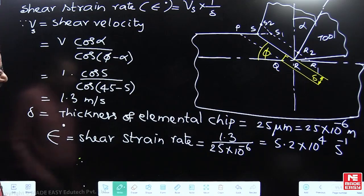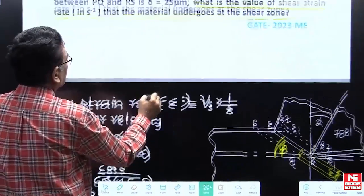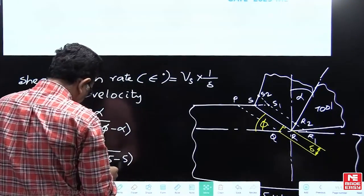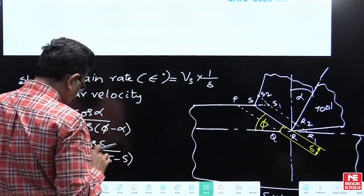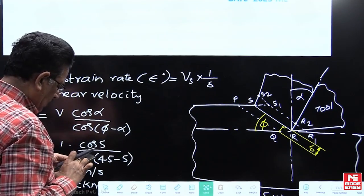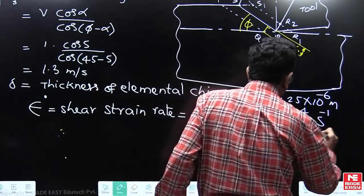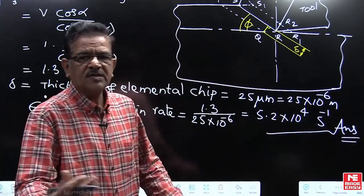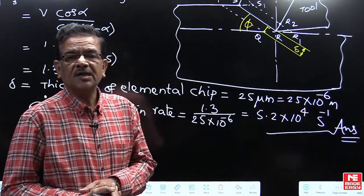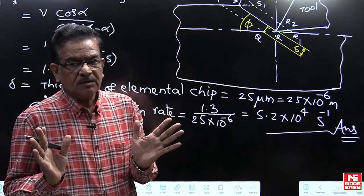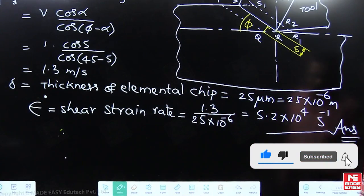Let us see this 5.2 into 10 power 4 per second as the right answer. You are asked to decide what is the value of shear strain rate. The shear strain value as decided by us is 5.2 into 10 power 4 per second, the right answer for this particular question. If the choices are given, you will be able to take it. If the examiner asks what is the shear strain rate, you can decide the answer. If it is given as fill in the blank, you can write this. That is how this question is answered correctly. The shear strain rate is 5.2 into 10 power 4 per second.